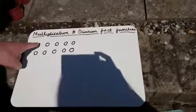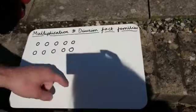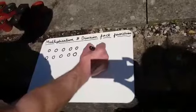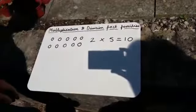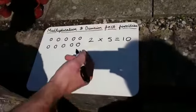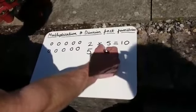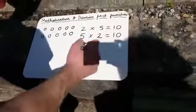So I've got an array of 10 circles. I've got 2 lots of 5. So we can write down that 2 multiplied by 5 equals 10. Well we can also write that another way. We call it commutative. We can say 5 multiplied by 2 equals 10.